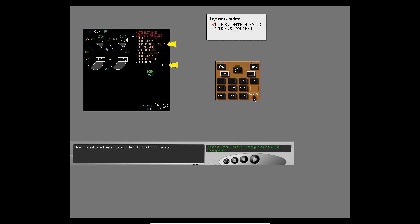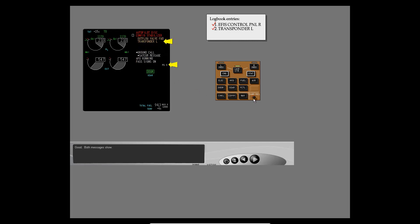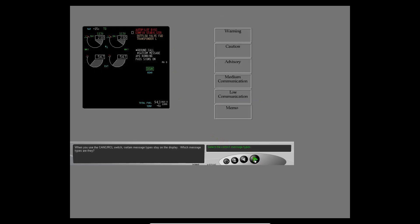Here is the first logbook entry. Now show the transponder left message. Look at another page. Both messages show. When you use the cancel recall switch, certain message types stay on the display. Which message types are they?